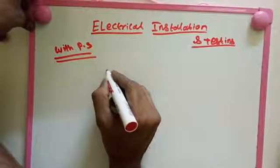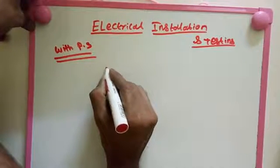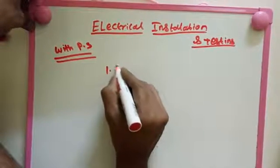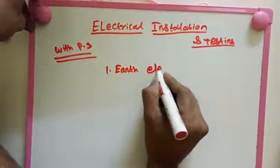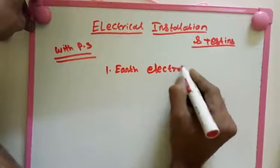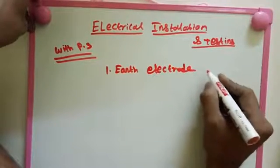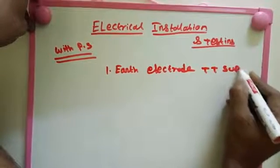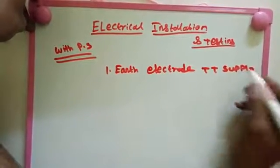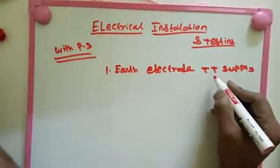The first one is earth electrode test. Earth electrode TT supply, that means type test supply we check.